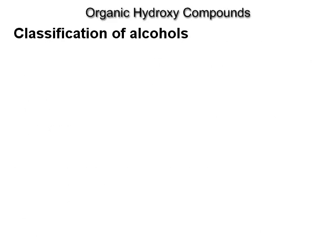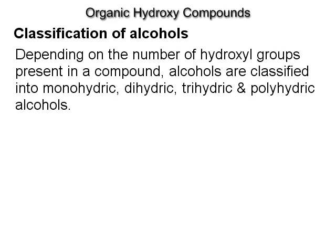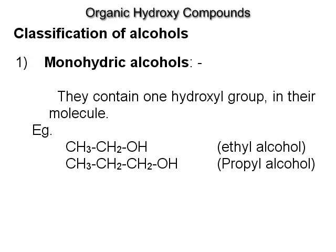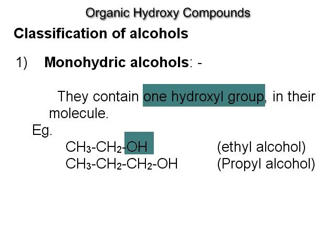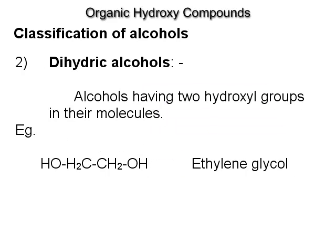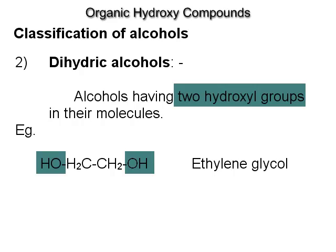Classification of alcohols. Depending on the number of hydroxyl groups present in a compound, alcohols are classified into monohydric, dihydric, trihydric and polyhydric alcohols. Monohydric alcohols contain one hydroxyl group in their molecule, for example, ethyl alcohol and propyl alcohol. Dihydric alcohols have two hydroxyl groups in their molecules, for example, ethylene glycol.